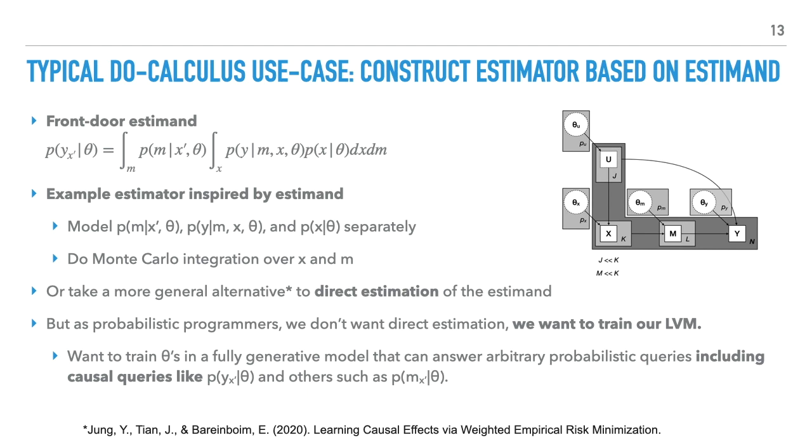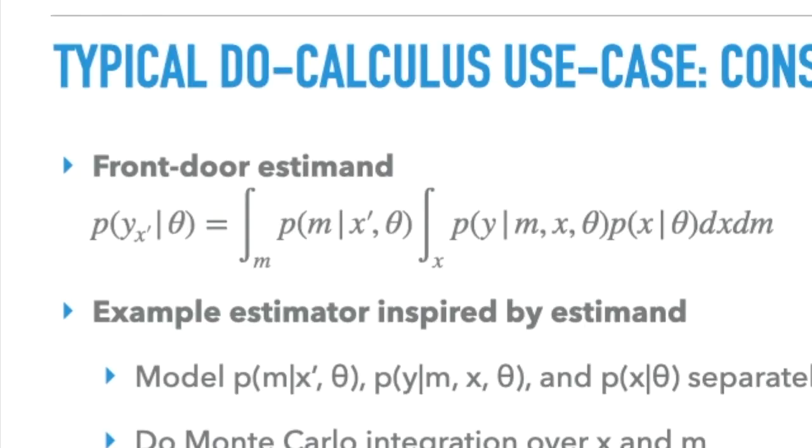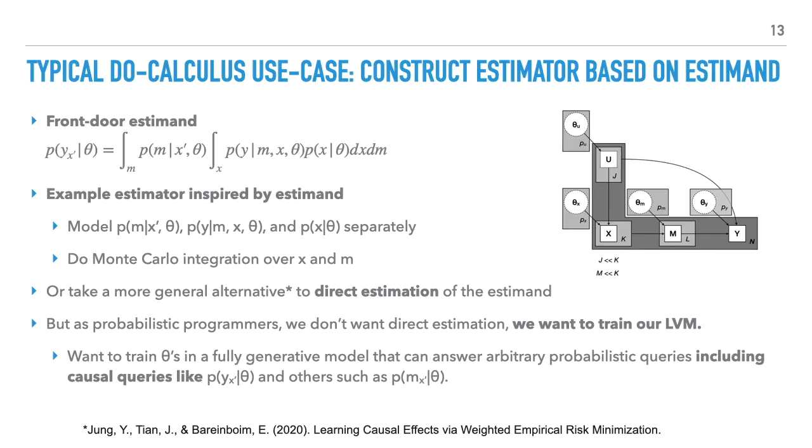So again, the typical use case for do-calculus is to derive a statistical estimator for the estimand. In our example, the front-door estimand is this double integral. In constructing an estimator for this estimand, we might observe that we're using these three distributions. The probability distribution of M given X, the probability distribution of Y given M and X, and the probability distribution of X. So we can model these three distributions directly and separately on X, M, and Y. Finally, we could apply Monte Carlo integration. Alternatively, we could apply other approaches for doing direct estimation of the estimand. This gives us the answer to the causal query.